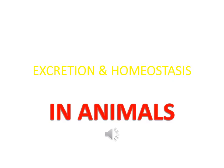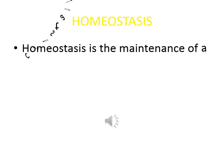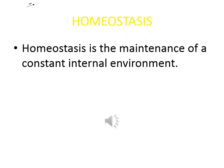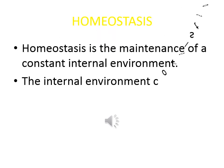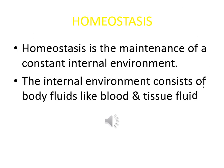In this topic, we are going to learn about homeostasis in animals and we will try to understand how homeostasis works. We start our lesson by defining homeostasis as the maintenance of a constant internal environment, and we define internal environment as the body fluids such as blood and tissue fluid.